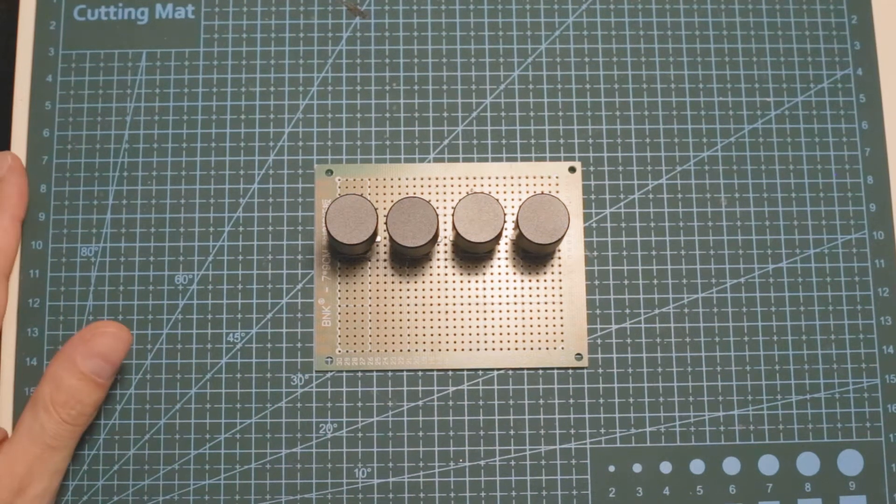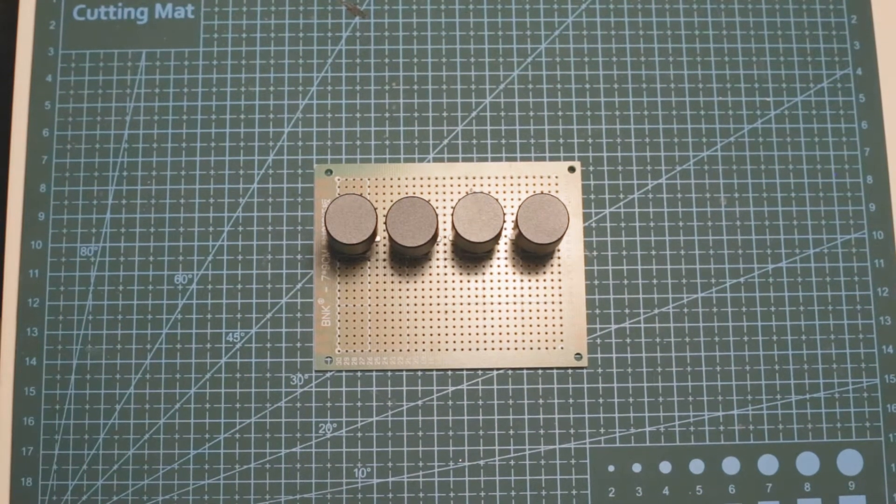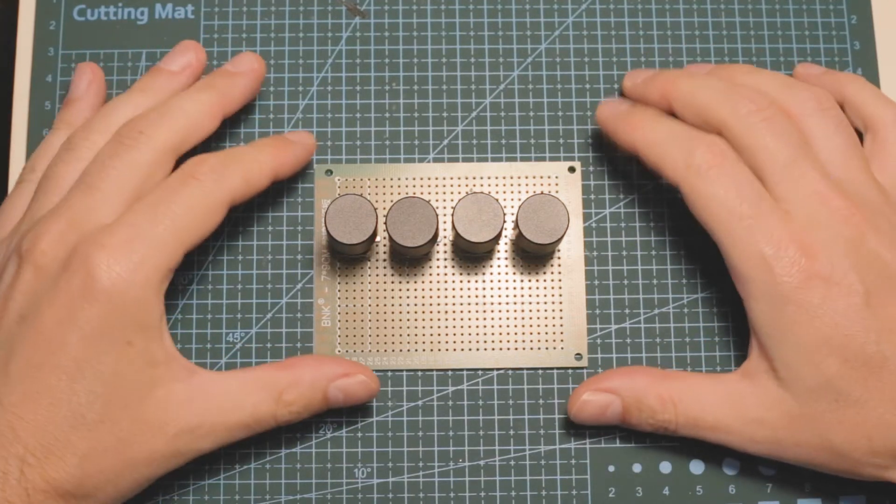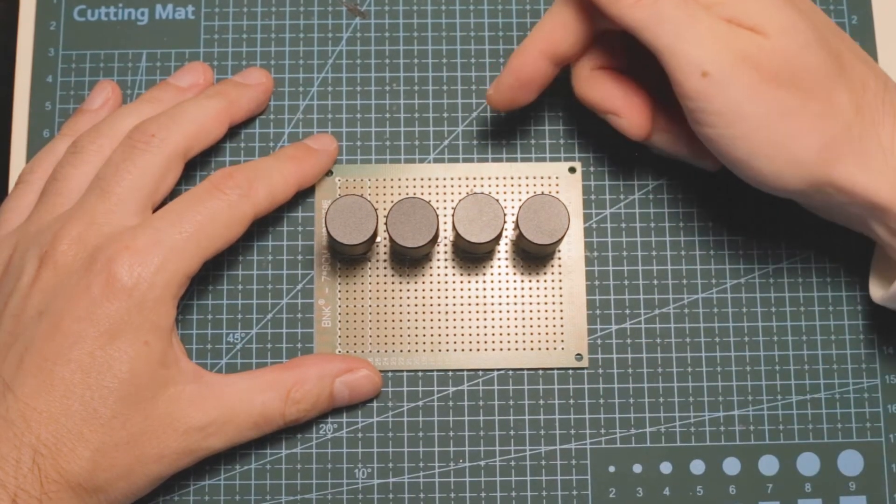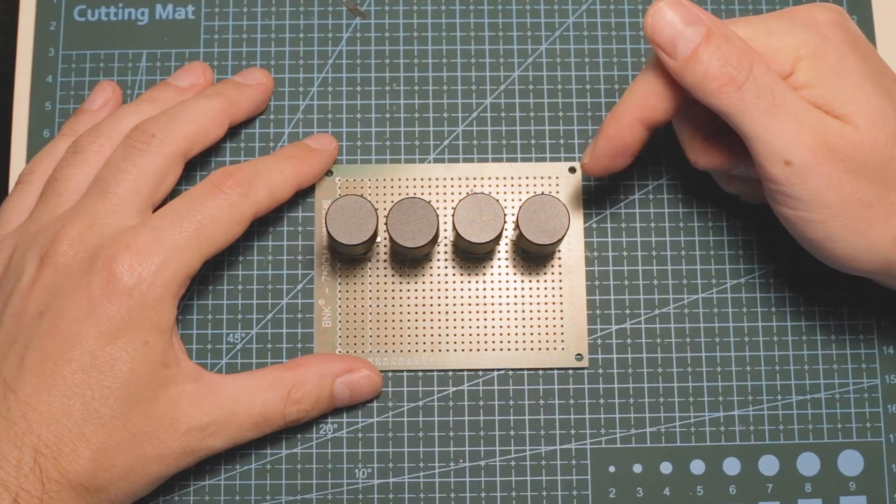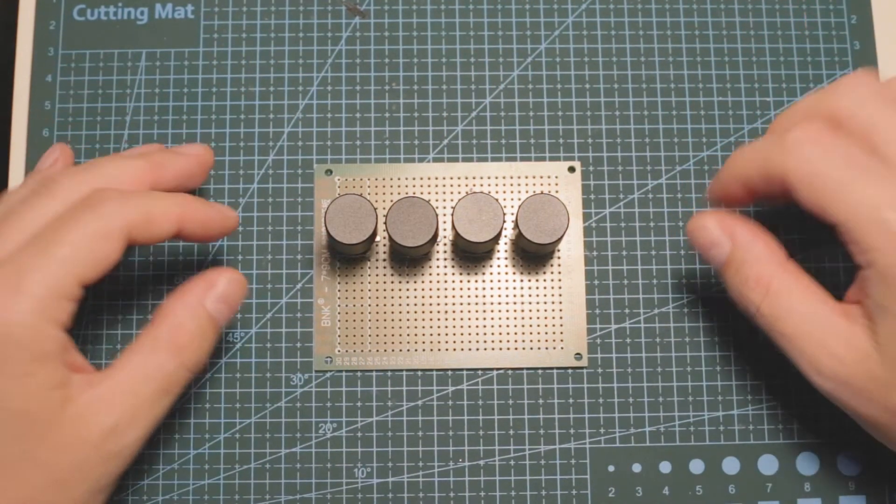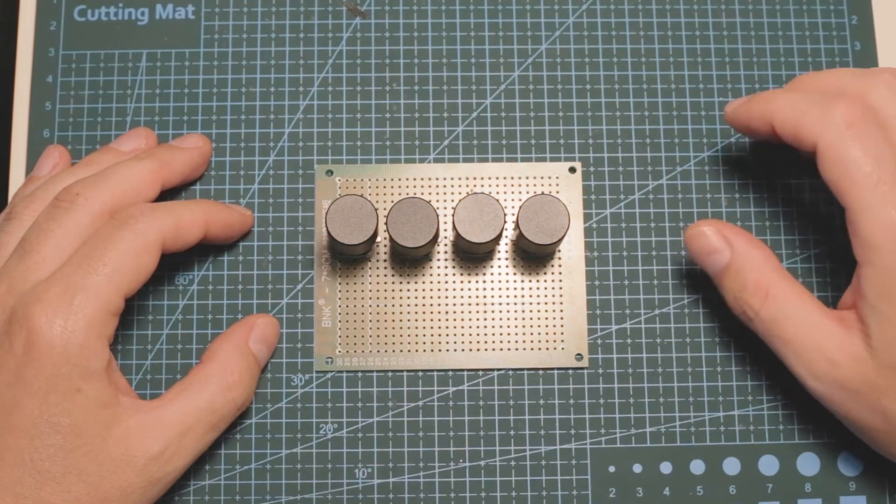Hi and welcome in the next episode of building the PS01 synthesizer. Today I wanted to focus on those. Those are four rotary encoders that are going to be used to change different functions and options in the synthesizer.